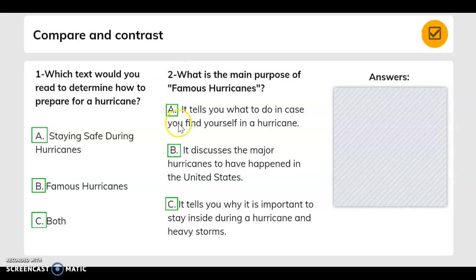For question two, what is the main purpose of Famous Hurricanes? A, it tells you what to do if you find yourself in a hurricane. B, it discusses the major hurricanes that have happened in the United States. And C, it tells you why it is important to stay inside during a hurricane and heavy storms.